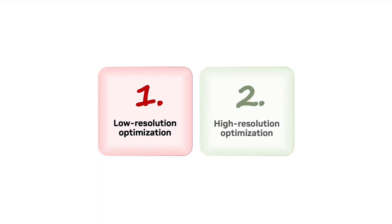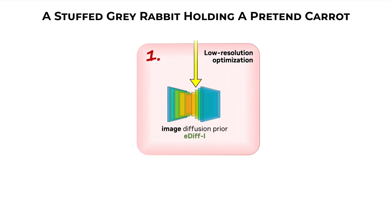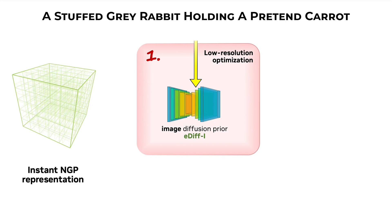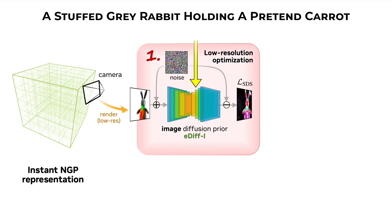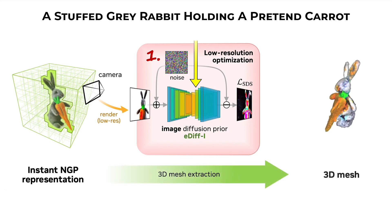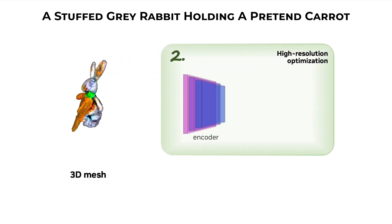So how does it create such beautiful models? Magic 3D uses a two-stage coarse-to-fine approach. In the first stage, it uses Edify as a low-resolution text-to-image diffusion prior. An instant neural graphics pipeline is optimized as the initial 3D representation, and the score distillation sampling loss is computed by repeatedly sampling and rendering low-resolution images to update the instant neural graphics pipeline. Then, a deep 3D conditional generative model called DMT-ET is used to extract an initial 3D mesh for the second stage.